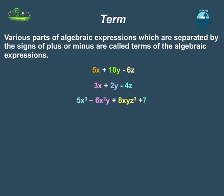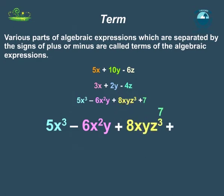5x cube minus 6x square y plus 8xyz cube plus 7. In this expression, the terms are 5x cube, minus 6x square y, 8xyz cube and 7.